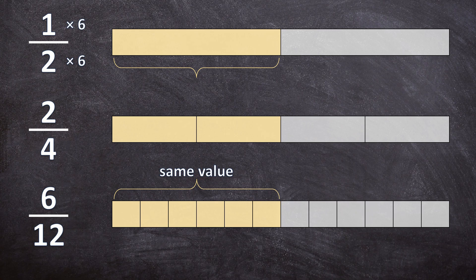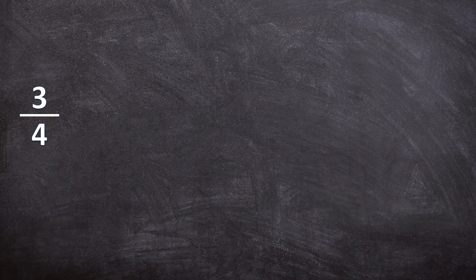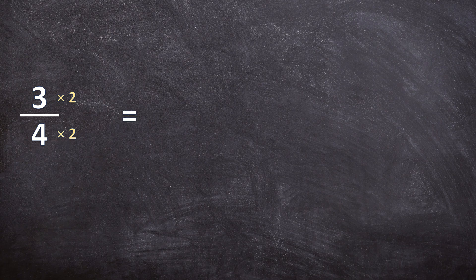Now without pictures, let's do another example. Here we have three over four, and remember, you can multiply the numerator and the denominator by anything as long as you multiply by the same number. I'm going to choose random numbers and give you three equivalent fractions. For the first one, I'll multiply the numerator and the denominator by two: three times two is six, over four times two is eight.